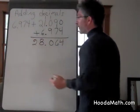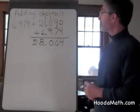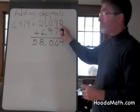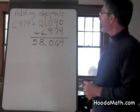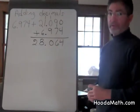Six and nine hundred seventy-four thousandths plus twenty-one and ninety thousandths equals twenty-eight and sixty-four thousandths.